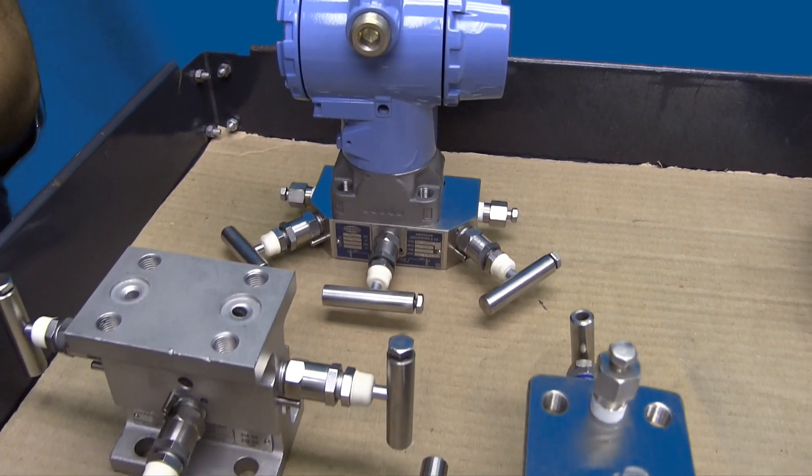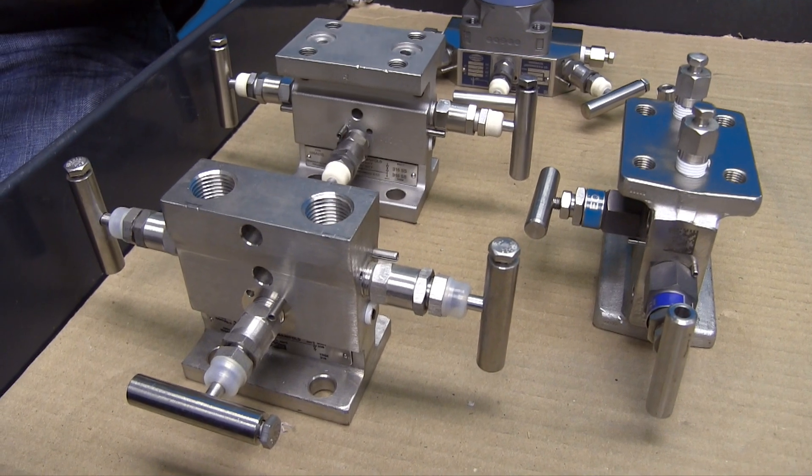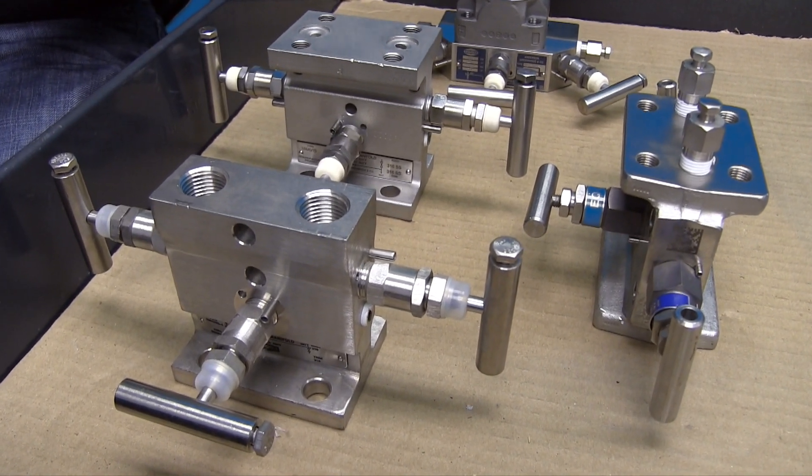Three-valve manifolds are normally used on differential pressure transmitters where it is necessary to block each process connection or equalize two sensor diaphragms.